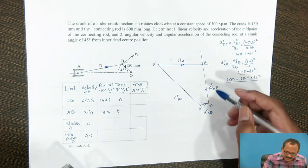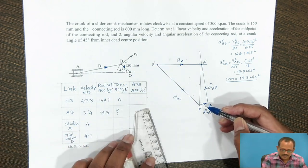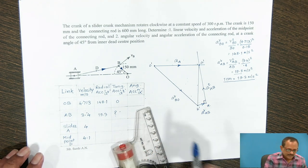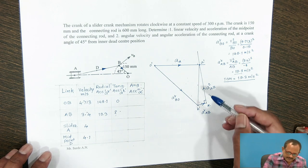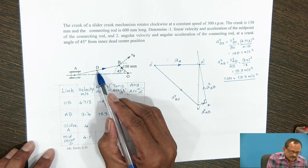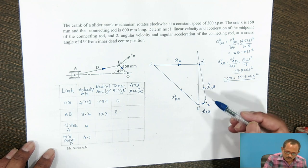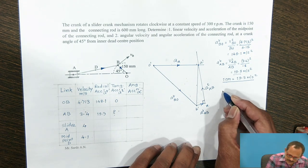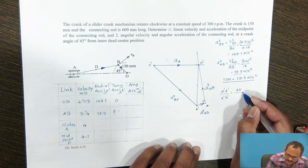Vector A'B' will represent the total acceleration of link AB, where the radial and tangential components of AB are perpendicular to each other. In the space diagram, point D is the midpoint of AB. Similarly, vector D' will lie on vector A'B'. Since point D divides link AB in a certain ratio, vector D' divides vector A'B' in the same ratio, using the equation: A'D' divided by A'B' equals link length AD divided by link length AB.